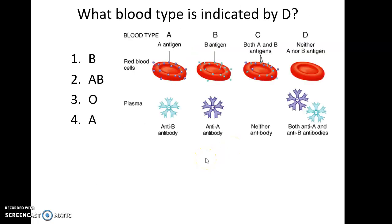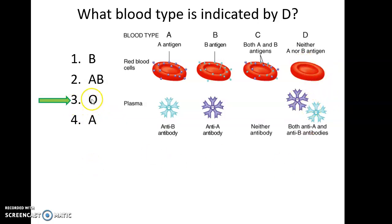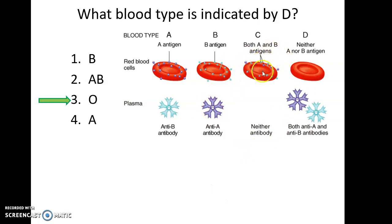Here is a question: what blood type is indicated by column D? It's O — no antigens on the surface, neither A nor B, so it is O. As you can see, someone with blood type O has antibodies against A and B; blood type A has antibodies against B; blood type B has antibodies against A; and AB has no antibodies, because you don't want to attack your own blood.